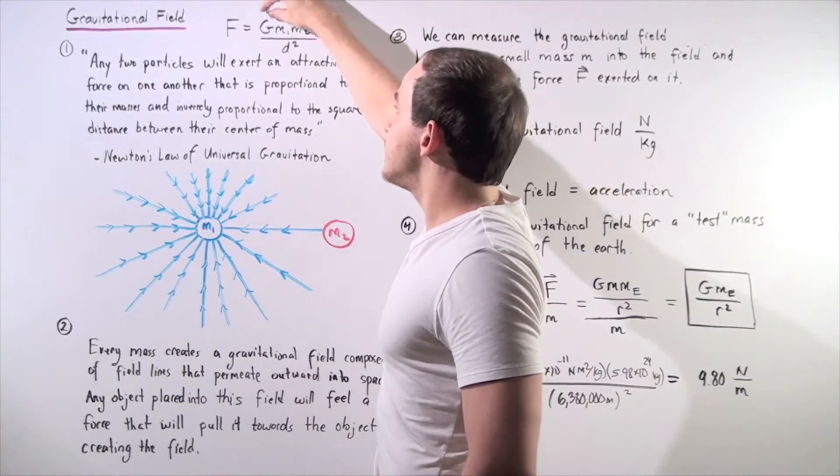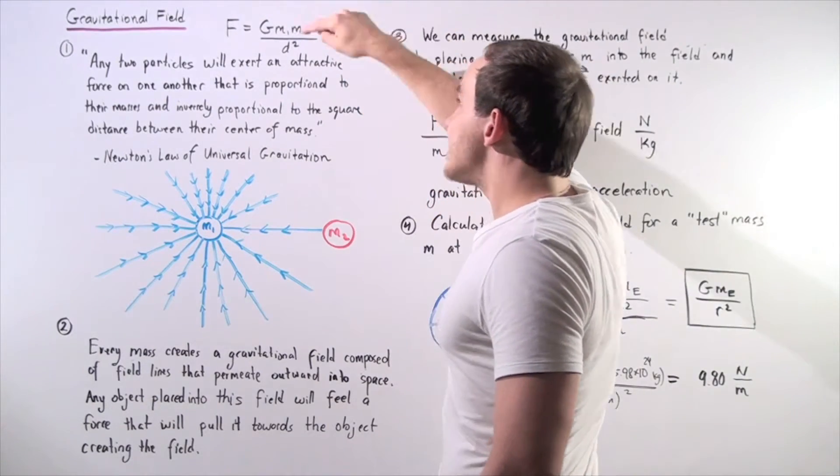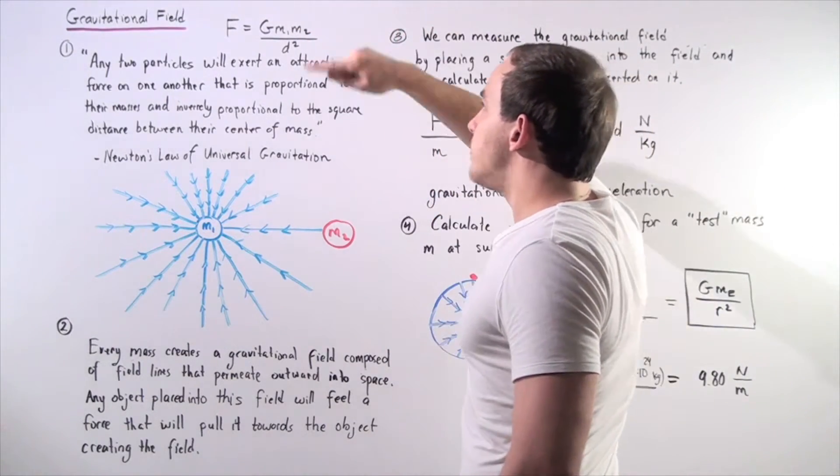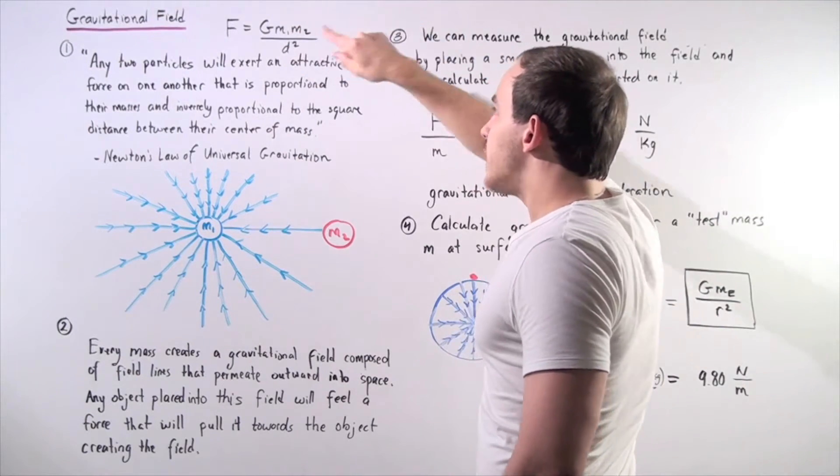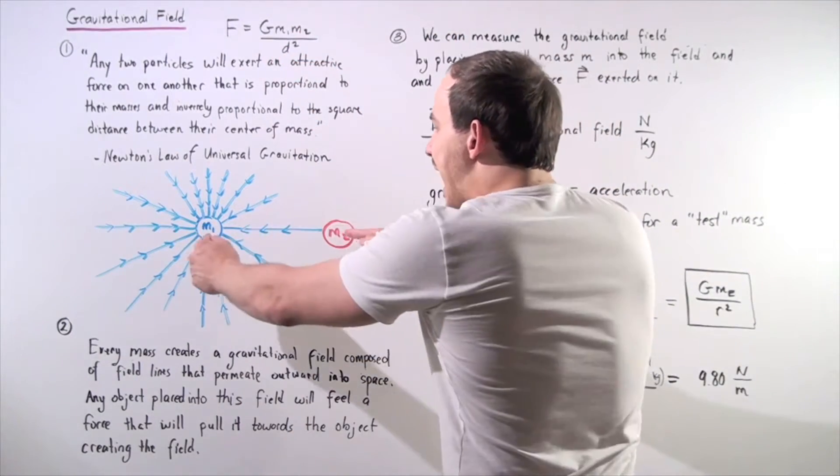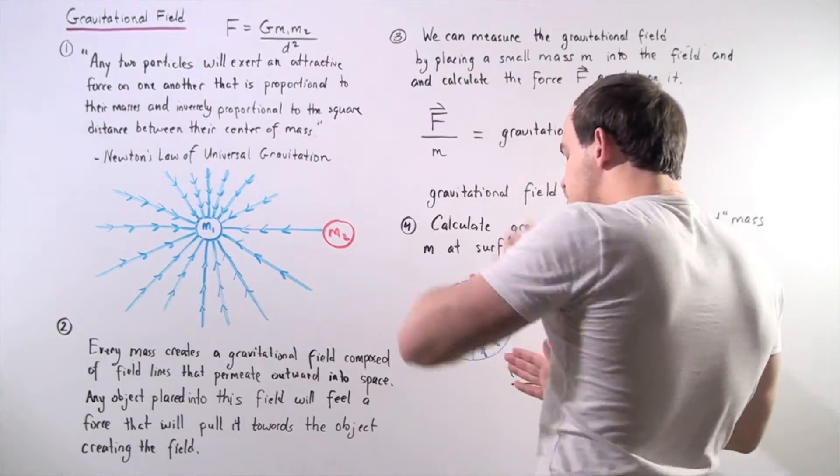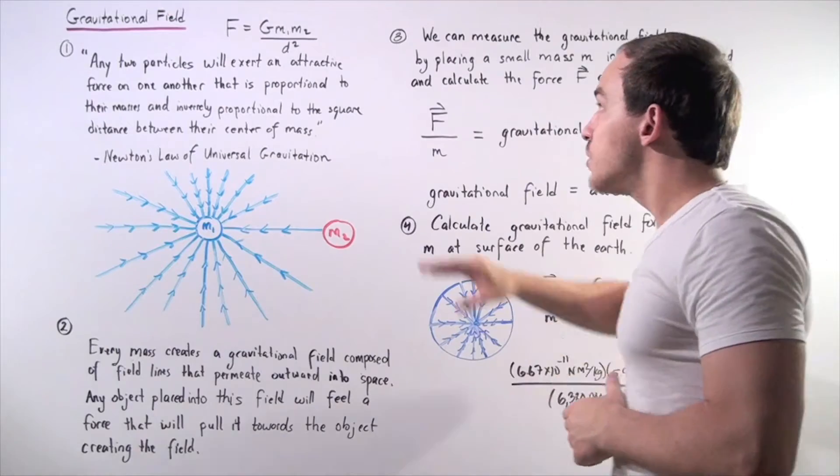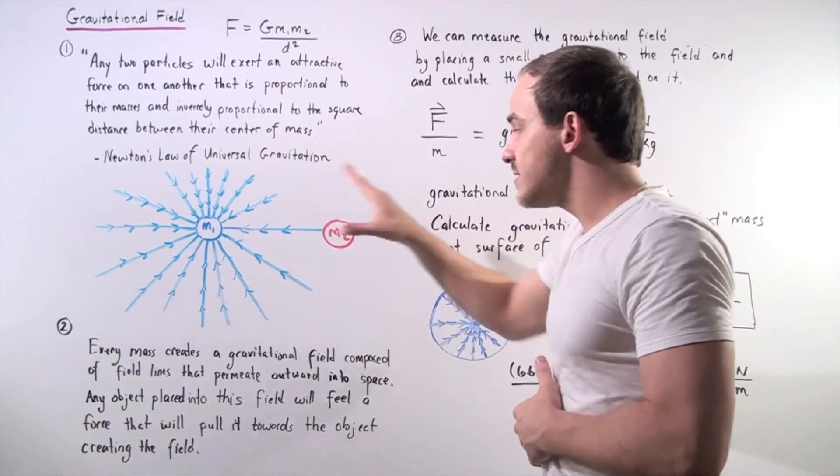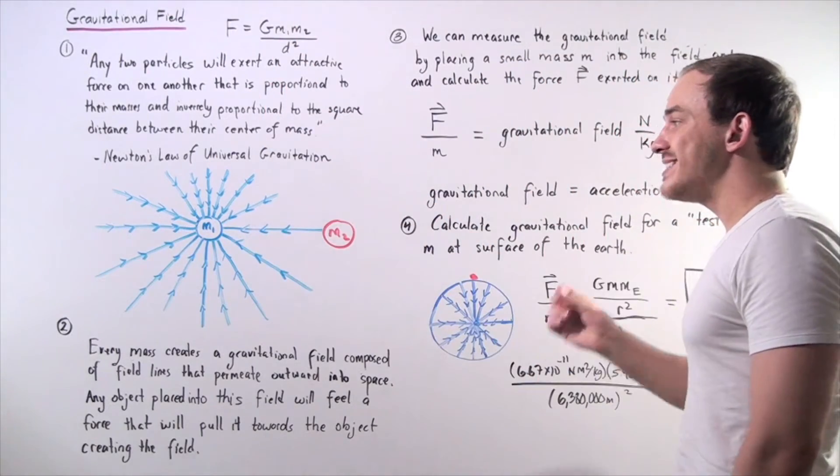So the magnitude of the forces will be exactly the same because it's given by the following equation. The gravitational constant G multiplied by mass of object one multiplied by mass of object two divided by the distance between our two objects, between the center of mass of our two objects and squaring that distance. So the magnitude of force is the same but our direction is opposite.